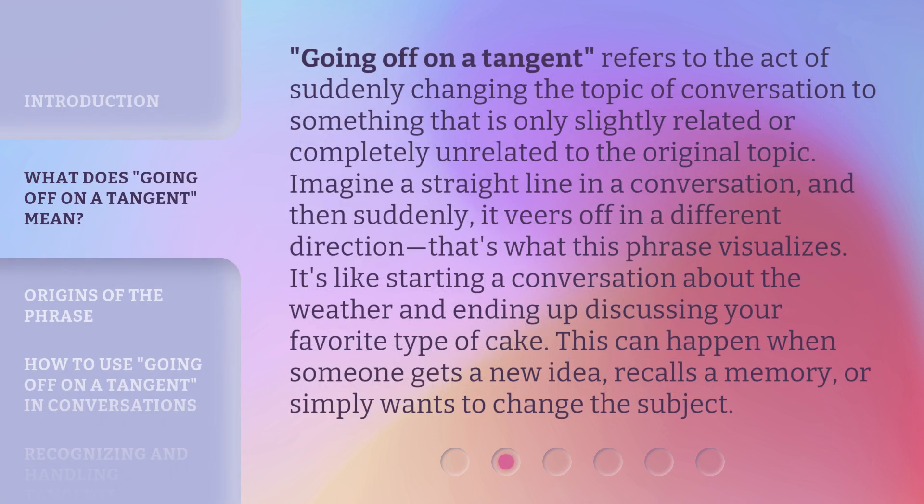Going off on a tangent refers to the act of suddenly changing the topic of conversation to something that is only slightly related or completely unrelated to the original topic. Imagine a straight line in a conversation, and then suddenly it veers off in a different direction — that's what this phrase visualizes. It's like starting a conversation about the weather and ending up discussing your favorite type of cake. This can happen when someone gets a new idea, recalls a memory, or simply wants to change the subject.